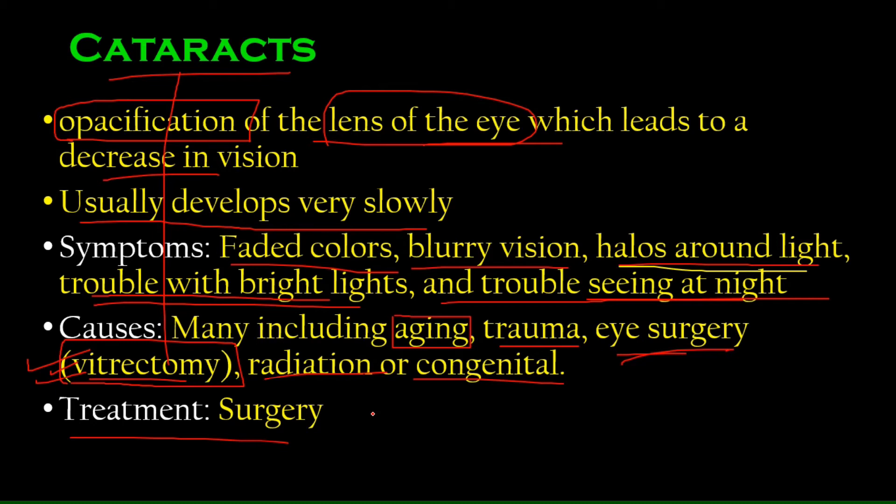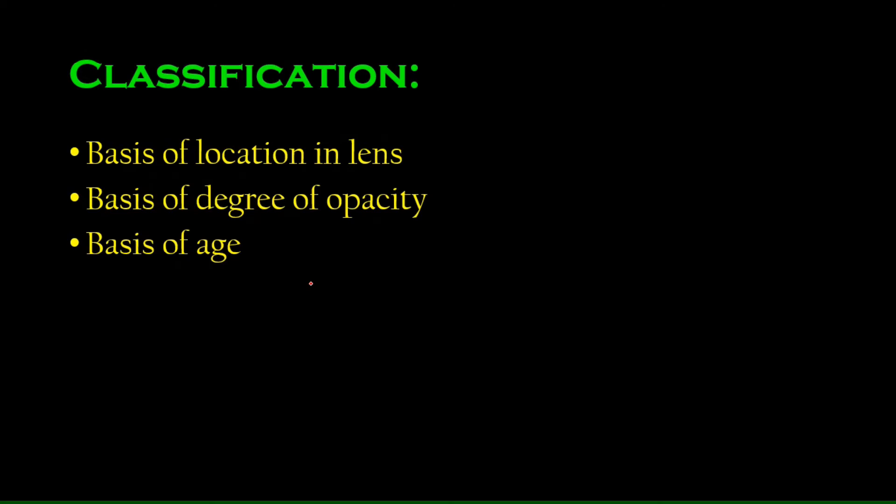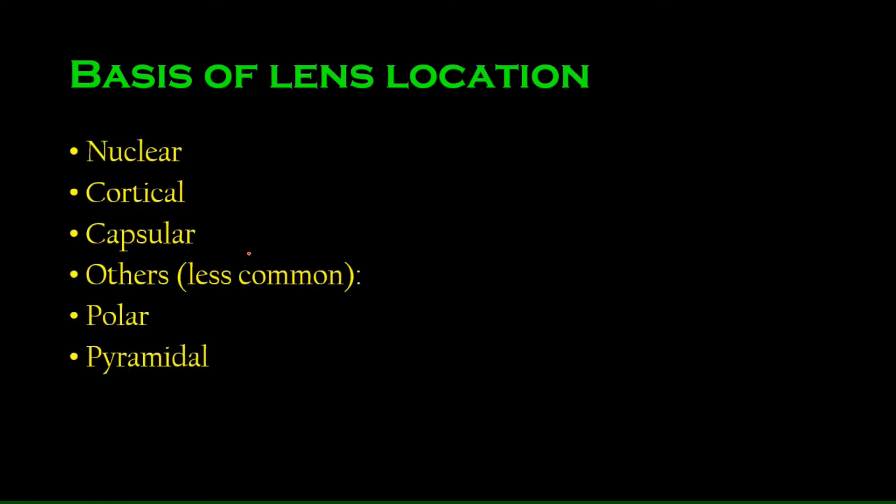And we will be studying surgery of cataracts in a lot of detail after a few lectures. Then classification of cataracts. So cataracts can be classified on the basis of the location in the lens, where there is opacification. It's based on the degree of opacity, how much there is opacification, and it's based on age. And at what age do you actually develop cataracts. Let's start off with the simplest one. Classification on the basis of location in the lens. So nuclear, cortical, capsular, polar, pyramidal. Let me have a picture. Let me have a lens.